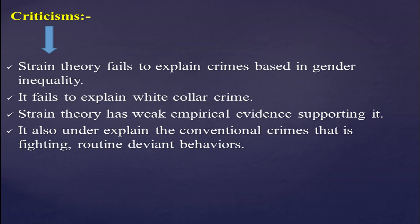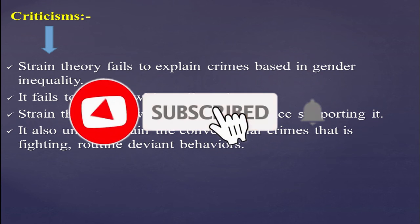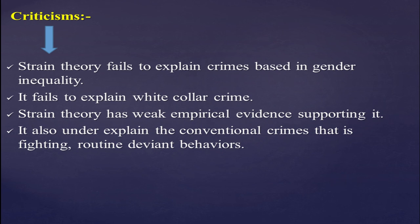That was about Robert Merton's anomie theory of crime. I hope you understand it. If you want more sociological theories of crime, go to my playlist on my channel where you can also see sociological theories and biological theories. If you have any confusion, you can ask questions in the comment section below. Please subscribe to my channel and press the bell icon to get notifications for upcoming lectures. Thank you very much and God bless you.